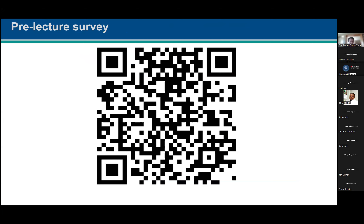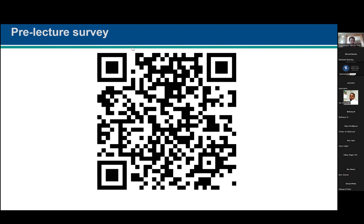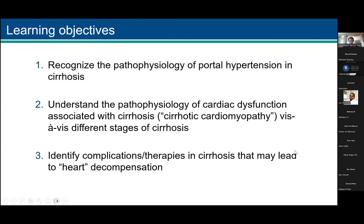So you think you have to scan this — it has like two questions that you can answer now, and then we'll repeat them at the end of the lecture. The learning objectives are to recognize the pathophysiology of portal hypertension and the hyperdynamic circulation in cirrhosis, understand the pathophysiology of cardiac dysfunction associated with cirrhosis — what we call cirrhotic cardiomyopathy — in relation to the different stages of cirrhosis.